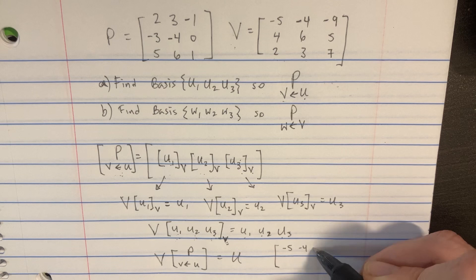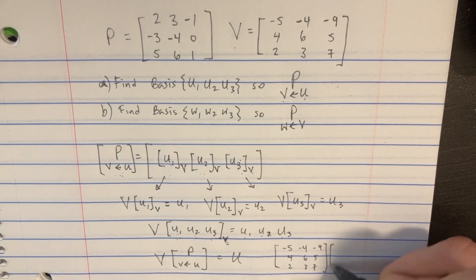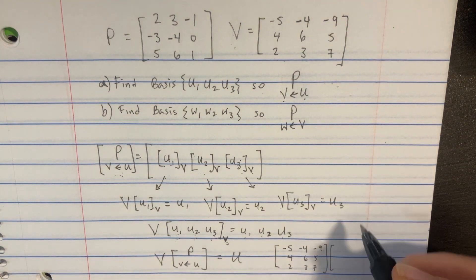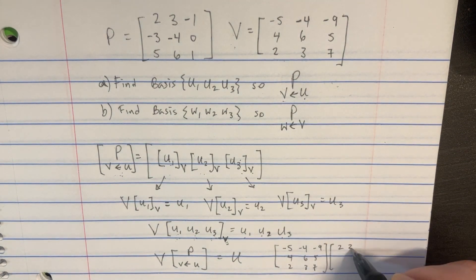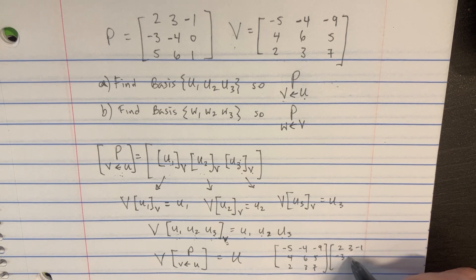So you would have to set this up with the V matrix on this side, negative 5, negative 4, negative 9, 4, 6, 5, 2, 3, 7. And this problem was tricky for me because I forgot that you got to put this P matrix on the right. So it'd be 2, 3, negative 1, negative 3, negative 4, 0, 5, 6, 1.